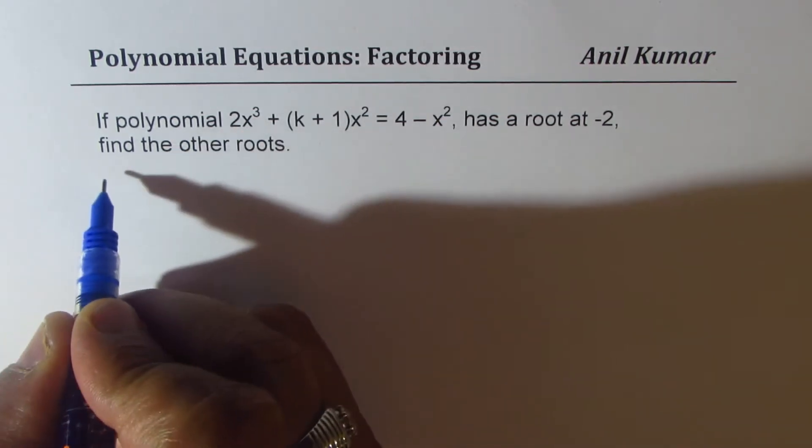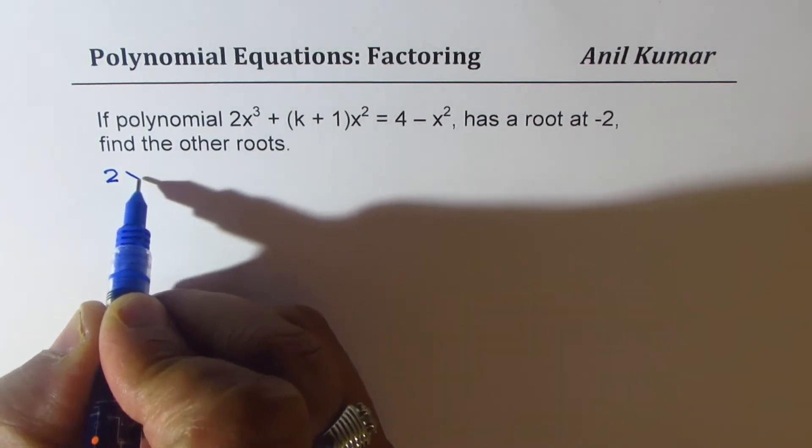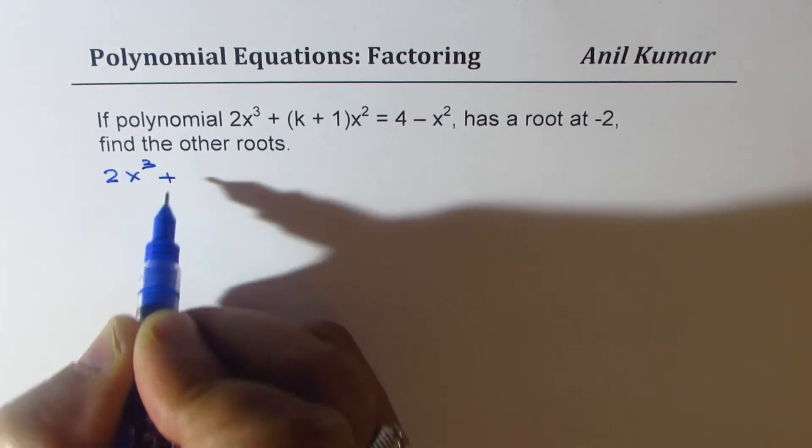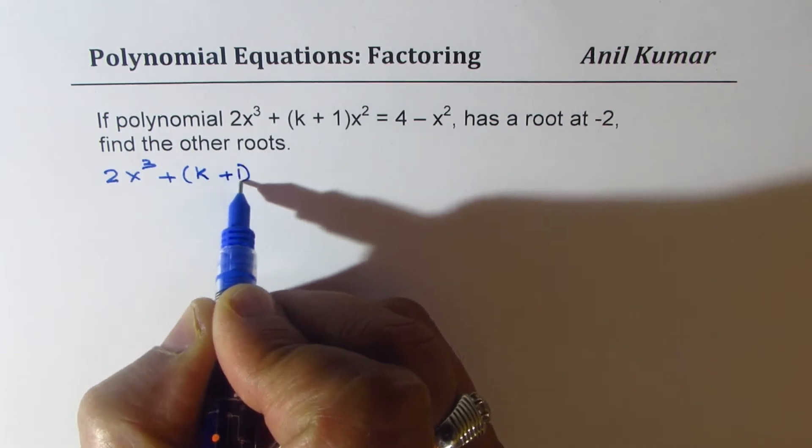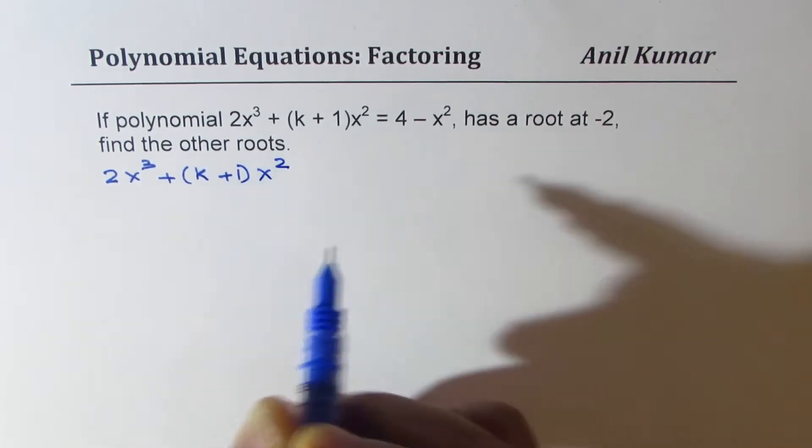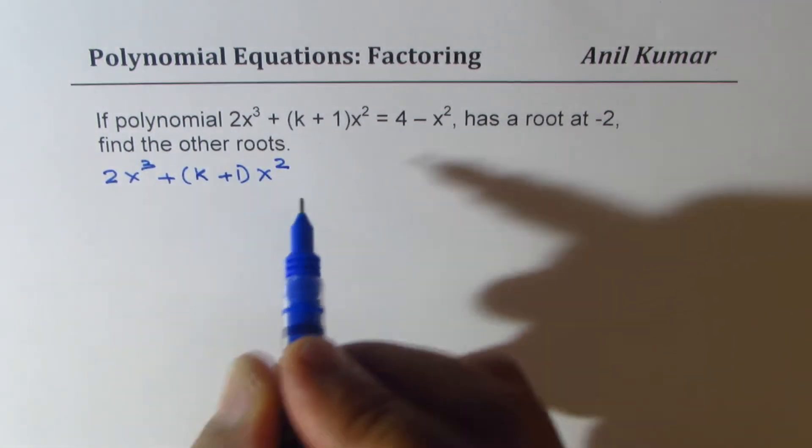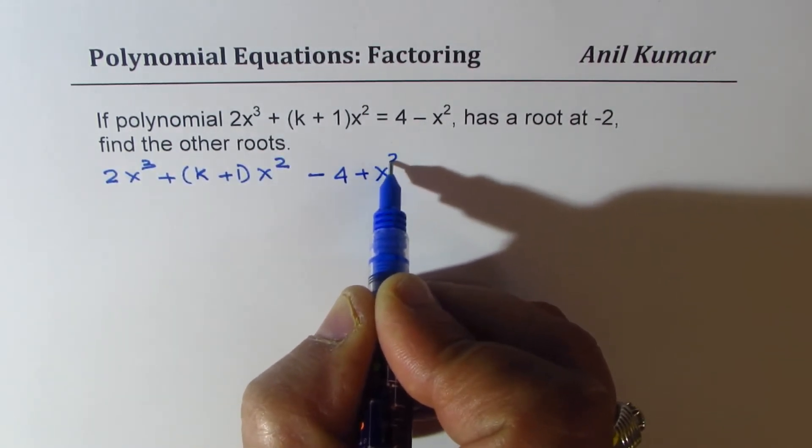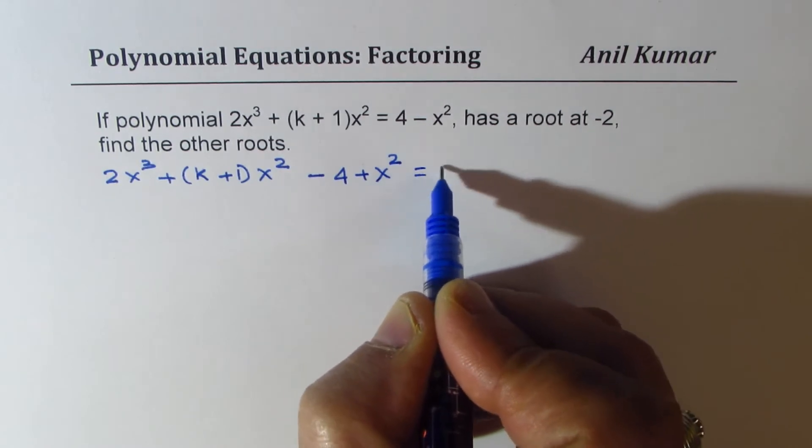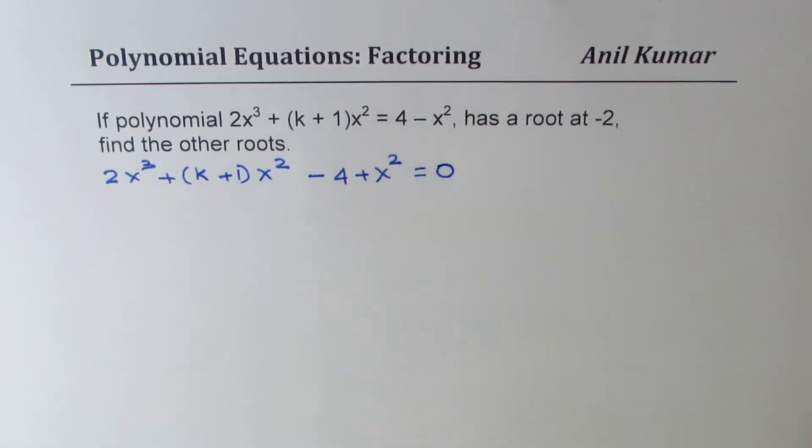So let's rewrite this function which is 2x³ + (k + 1)x². Let me bring all the terms to one side. So we'll write this as -4 + x², and it becomes equal to 0. So I've rewritten. Now when I say that it has a root at -2,